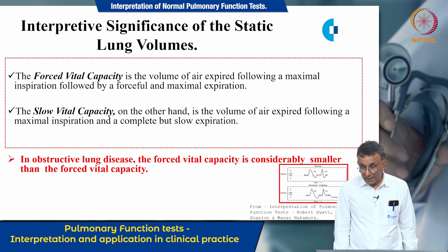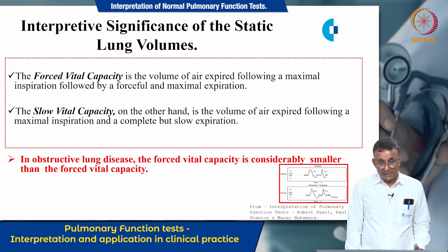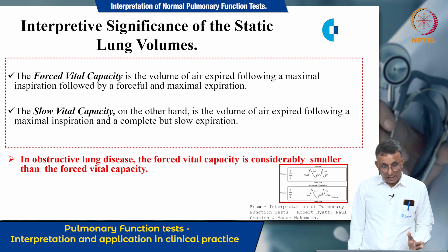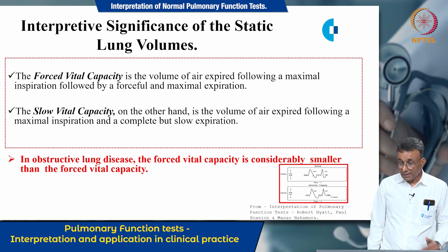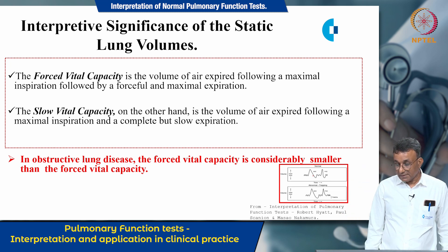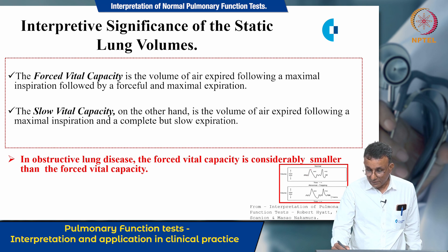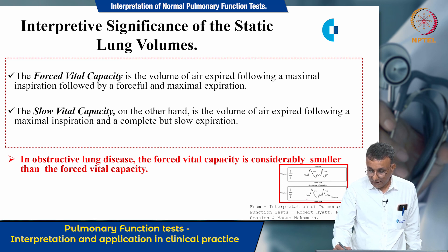When comparing the forced vital capacity and the slow vital capacity on the spirogram, we must know that in obstructive lung disease, the forced vital capacity is considerably smaller. This graph shows a normal comparison of the slow vital capacity with the forced vital capacity, and here you can see that the forced vital capacity is compromised in obstructive lung disease.